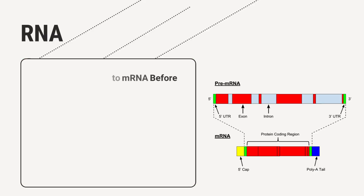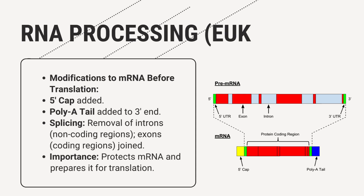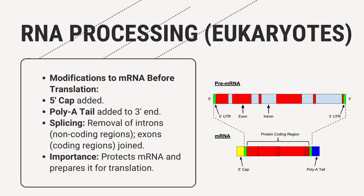In eukaryotes, the initial mRNA transcript, called pre-mRNA, undergoes several modifications before it can be translated. These include the addition of a 5' cap, a poly-A tail, and splicing to remove non-coding introns while joining coding exons. These modifications protect the mRNA and prepare it for translation, ensuring it can be efficiently translated into a protein.